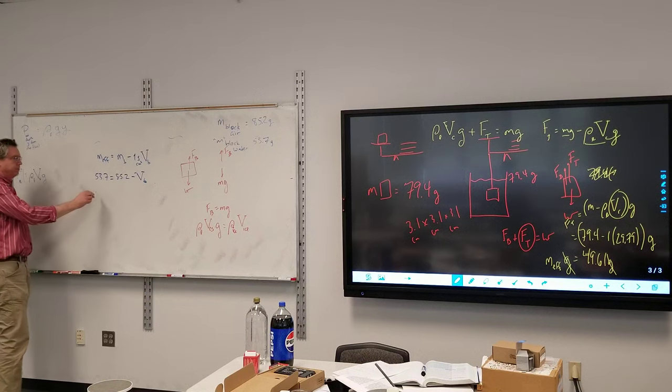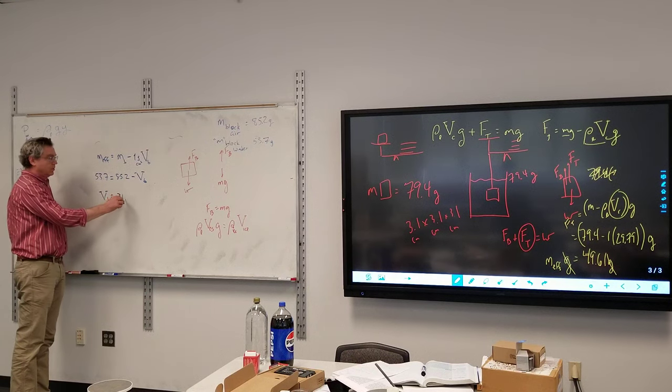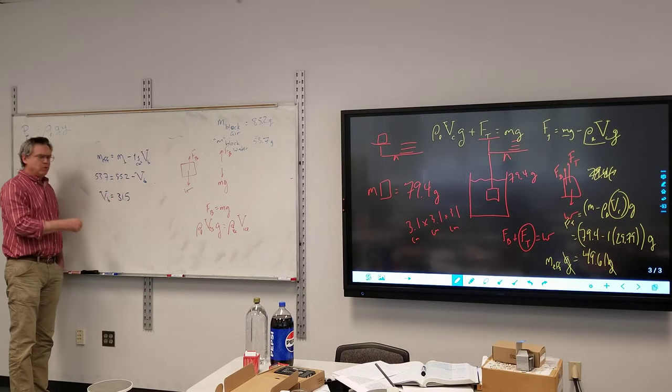Okay, so what is the volume? 31.5. What did you get? 31.5. What would the units be?